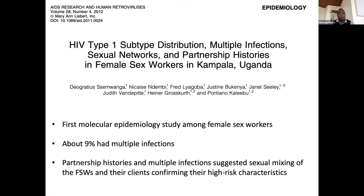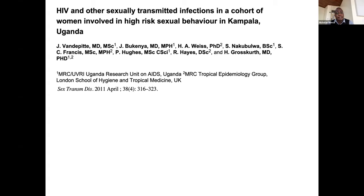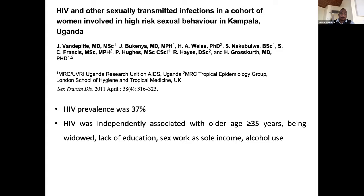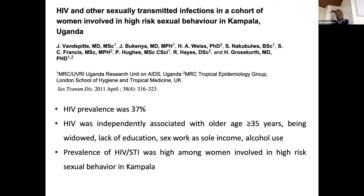There was another study done by Van de Pieter, in which the prevalence of HIV was estimated at about 37%. HIV was independently associated with female sex workers of older age above 35 years, those who were widowed, a lack of education, and those who did sex work as a sole income source. It was also associated with alcohol use within this group. The prevalence of HIV and other sexually transmitted infections was high among women in this study, and there are also reports of high-risk sexual behavior.